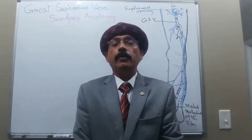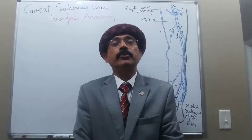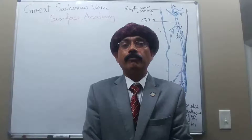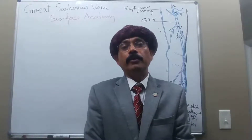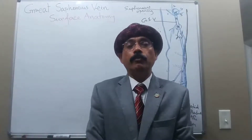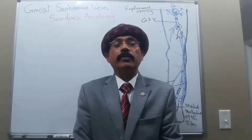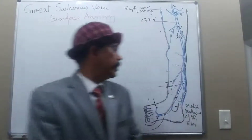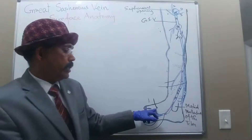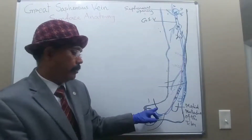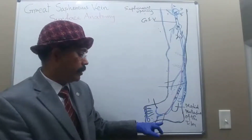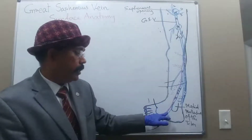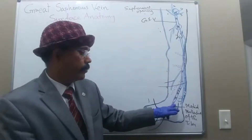Hello, my name is Dr. Diwan S. Raja. Today I will discuss the surface anatomy of the great saphenous vein. We know that the great saphenous vein is the longest vein in our body. It is formed by the union of the medial end of the dorsal venous arch with the medial marginal vein on the dorsal of the foot.